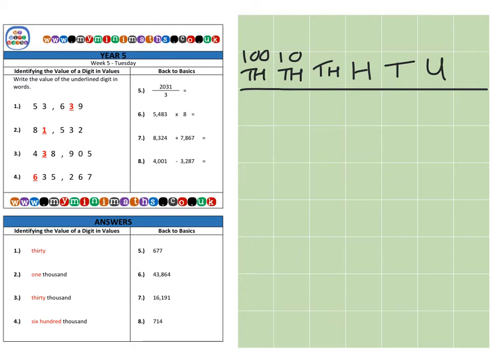On to question one, which is 53,639. As we can see, the red three is in the tens column, so it has a value of 30.